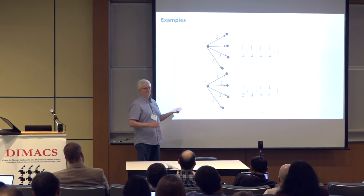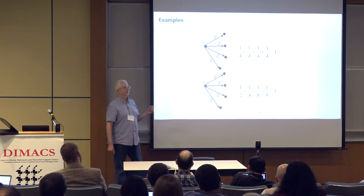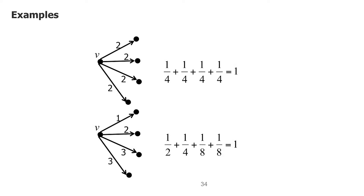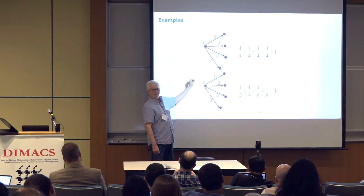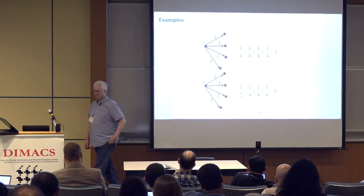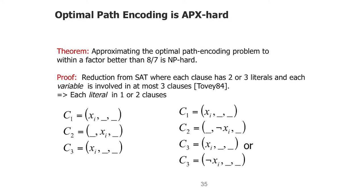To give an idea of what Kraft's inequality constrains: with four outgoing arcs, I could label them all with length-2 labels — four times 1/4 equals 1, that's fine. But I could also spread things out: give one arc a label of length 1 and give others longer labels. If there are long paths going out one direction, I might want to give that arc a short label and shift weight to the others. Of course, it's NP-hard to minimize this.